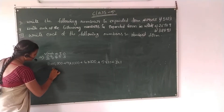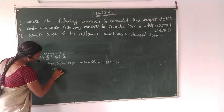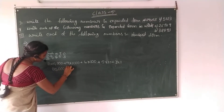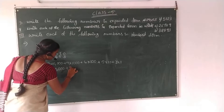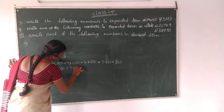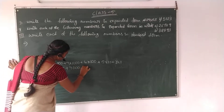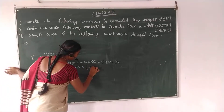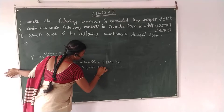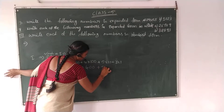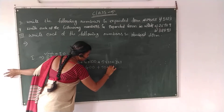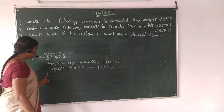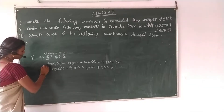So: 2 into 10,000 is 20,000. Plus 9,000. Plus 400. Plus 50. Plus 3. This is the expanded form.